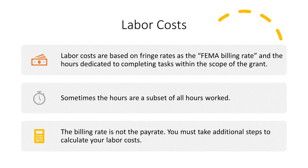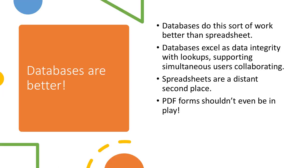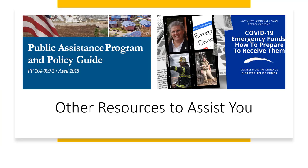This means you can't just hand FEMA your payroll records — you must take additional steps to calculate your labor costs. Equipment costs must correspond to the FEMA equipment schedule authorized for the disaster, typically a year or two prior; they adjust the rates based on fuel costs and inflation. Equipment has a four-digit code and a predetermined billing rate. Databases do this sort of work better than spreadsheets because they excel at data integrity with lookups, supporting mechanisms, and user collaboration. Spreadsheets are a distant second place. In our episode 'How to Prepare to Receive Emergency Funds,' we discussed calculating fringe rate — if you missed that, please go back and take a look. The FEMA PAPA-G, the Public Assistance Program Policy Guide, provides minimal help but it is defined there.